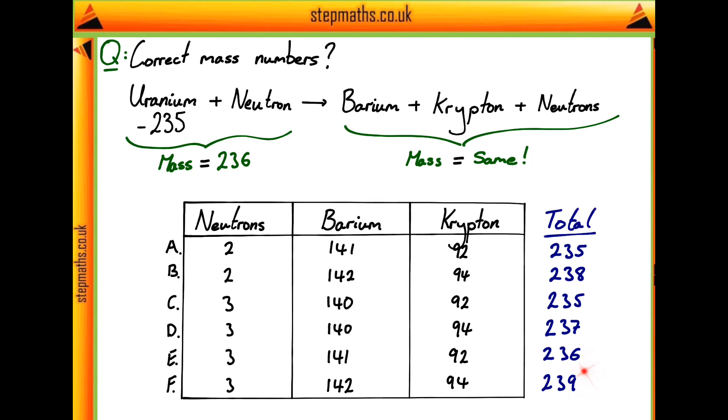You should notice straight away that the only one which corresponds to our mass of 236 is answer E. This has to be our correct answer, since none of the other answers' mass is conserved. Our correct answer is E: we have three neutrons, barium has an atomic mass of 141, and krypton has an atomic mass of 92.